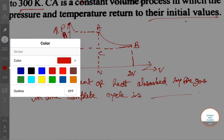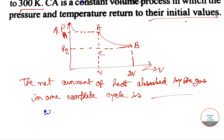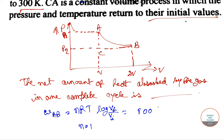The work done through AB: W_AB = nRT log(V_final / V_initial). Here we have a monoatomic ideal gas with n = 1, and T = 800 Kelvin. Since the volume gets doubled, V_final = 2V, so W_AB = 800R log(2V/V) = 800R log 2.